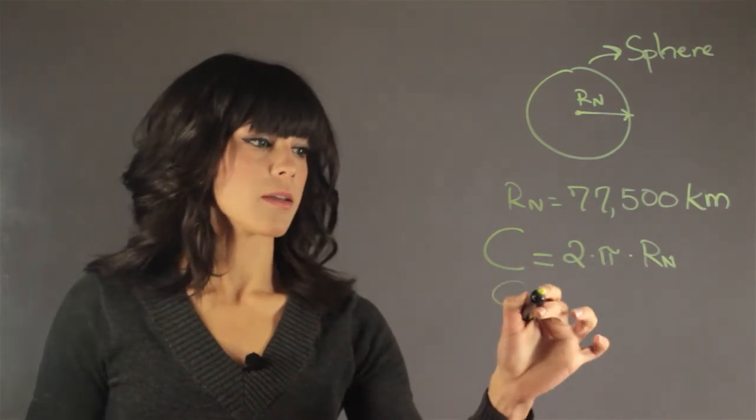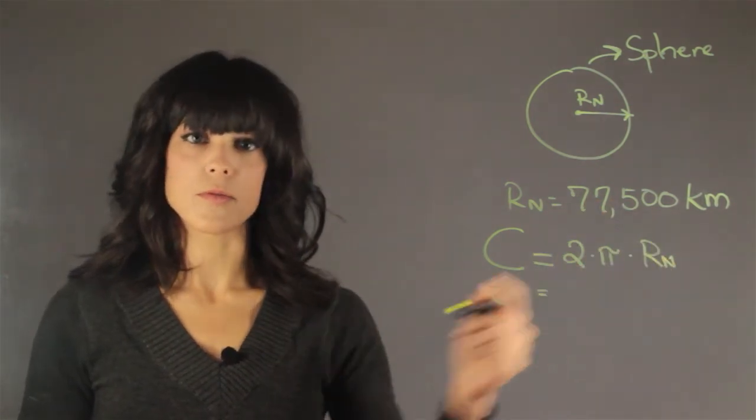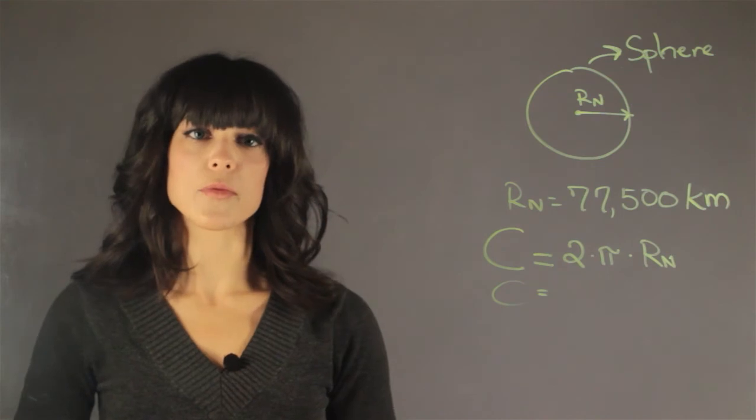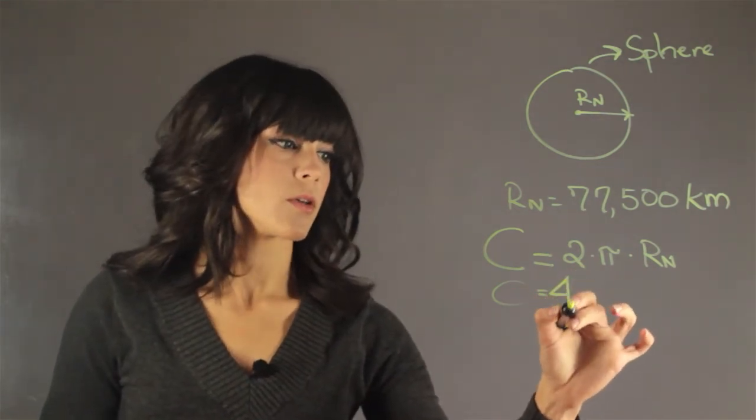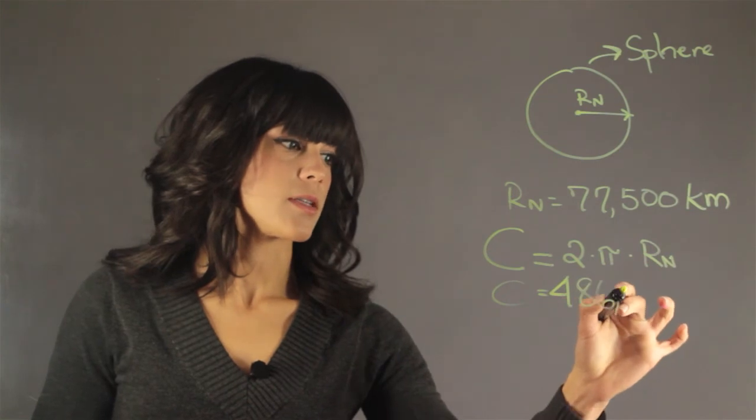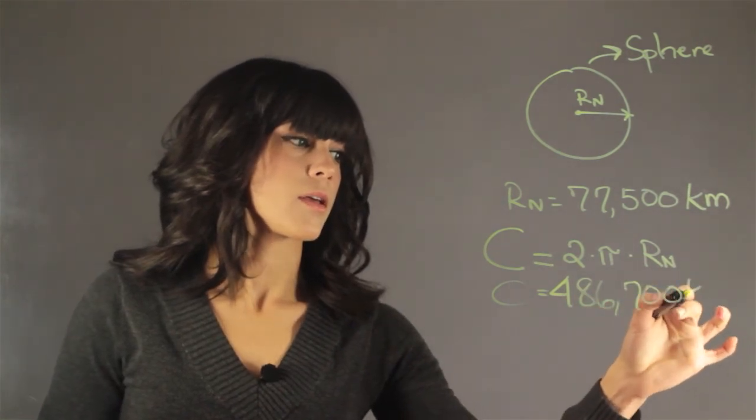If you plug in the radius for the value and about 3.14 for pi, you'll get that the circumference of Neptune is 486,700 kilometers.